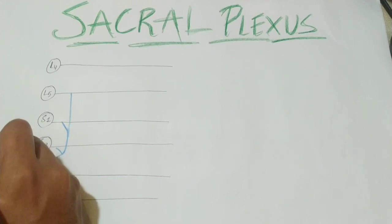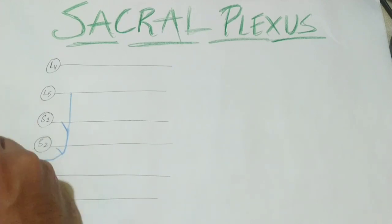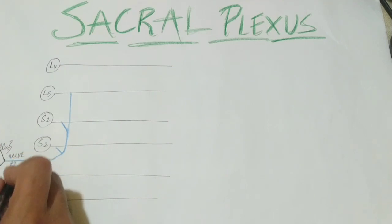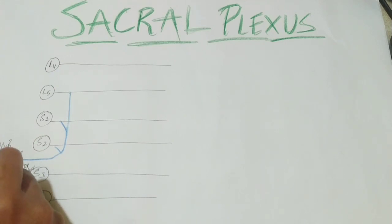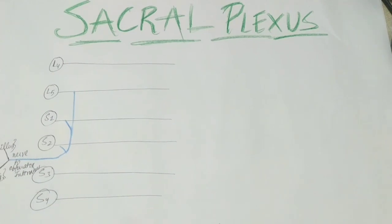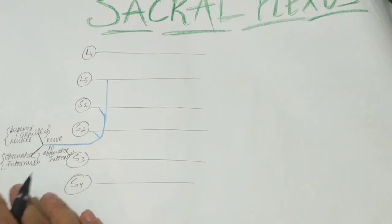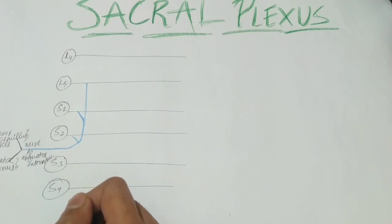The nerve to obturator internus supplies two muscles: first is the superior gemellus, a hip joint rotator muscle; and second is the obturator internus itself. Don't confuse it with obturator externus, which was supplied from the lumbar plexus via the obturator nerve.